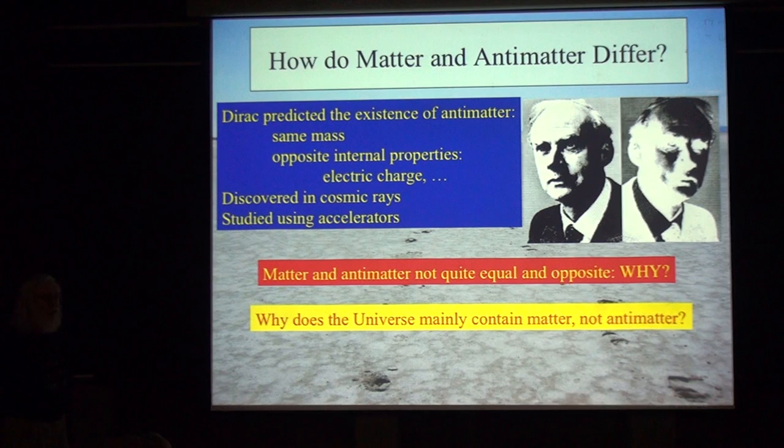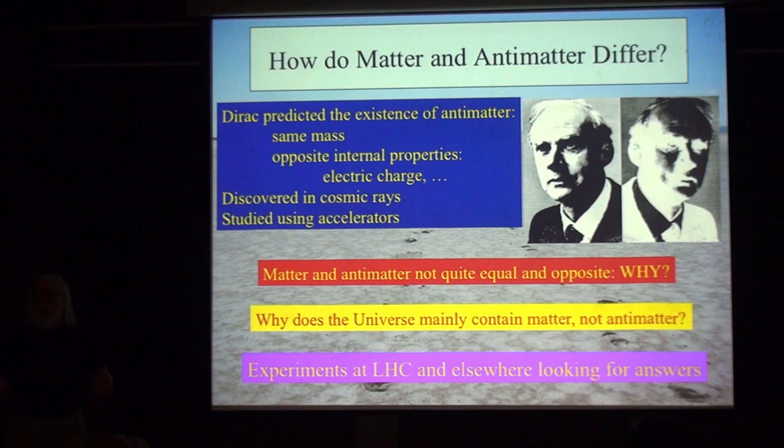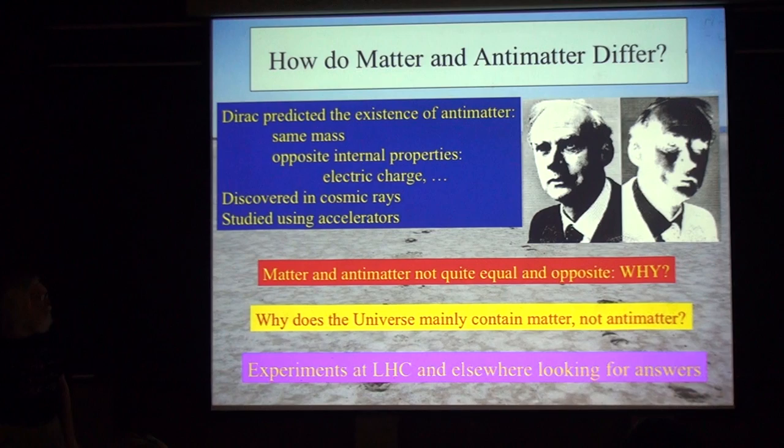It was suggested by the Russian physicist Sakharov that this might explain why in the universe today there is matter but no large amounts of antimatter. There are experiments at the LHC which are trying to study this matter-antimatter difference and maybe make a connection with this cosmic matter-antimatter symmetry.